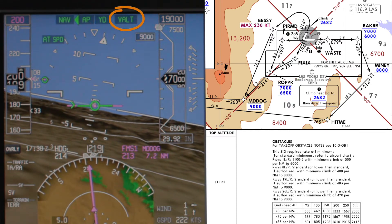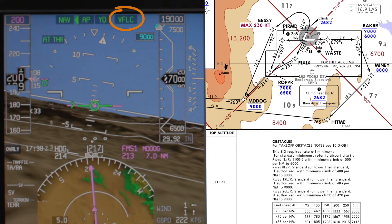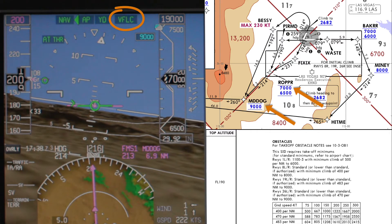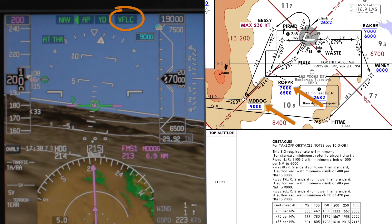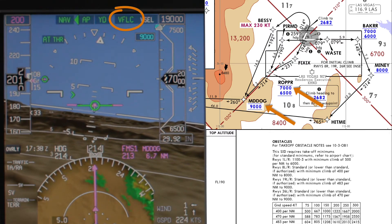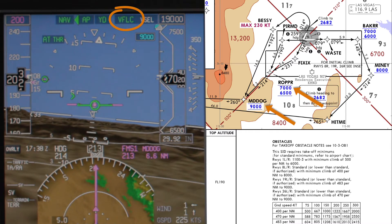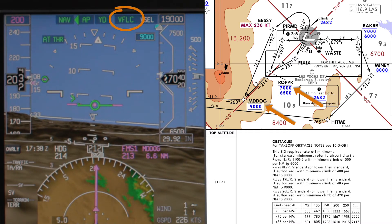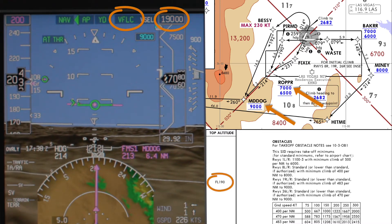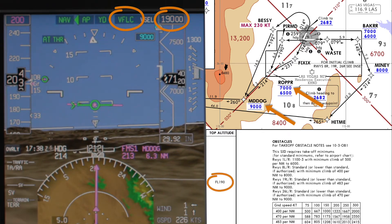Once the aircraft levels off at the FMS altitude target, the active mode changes to VALTITUDE. The FMS transitions from VALTITUDE to VFLC mode automatically when the next altitude restriction in the climb is an FMS target altitude. For this to happen, the altitude preselector must be set at or above the next altitude restriction.